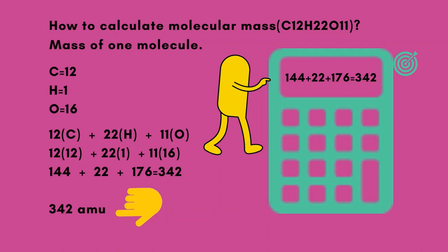12C plus 22H plus 11O: 12 times 12 plus 22 times 1 plus 11 times 16. 144 plus 22 plus 176 equals 342. 342 amu.